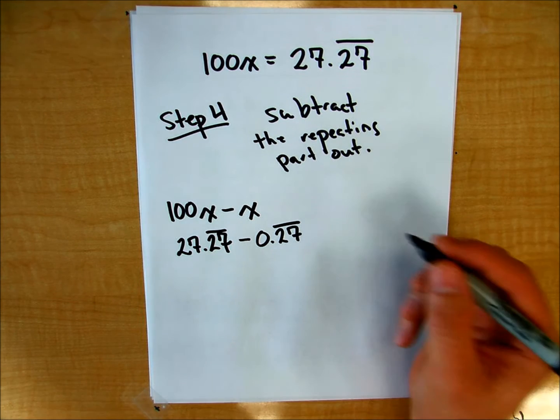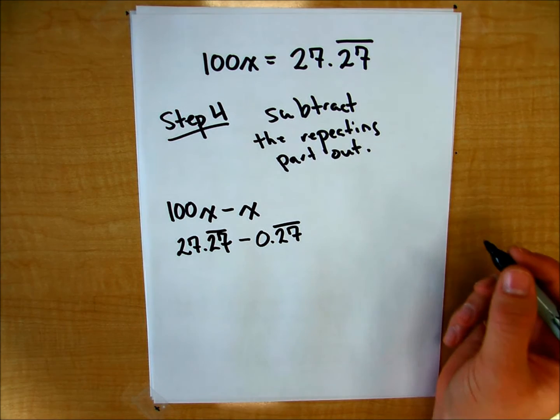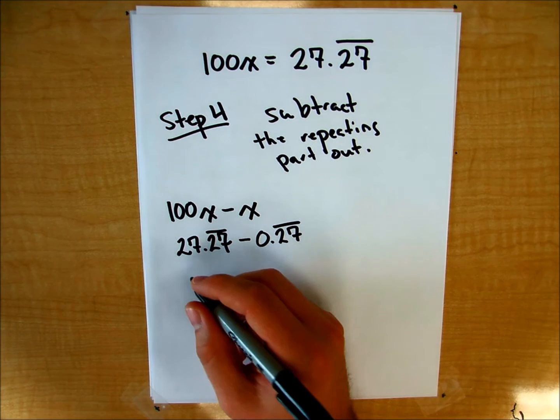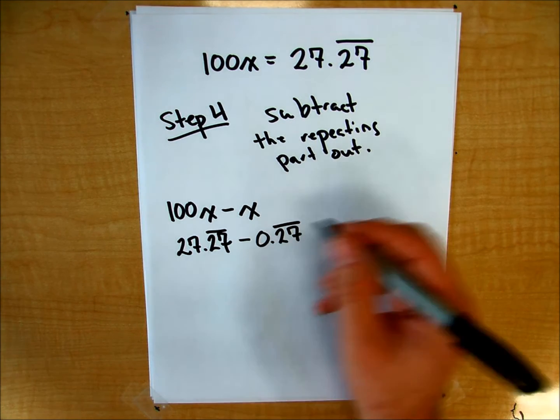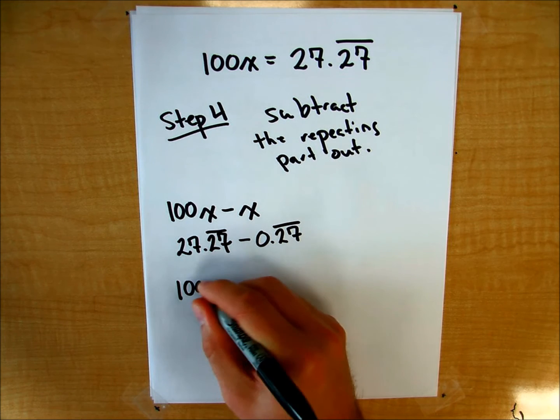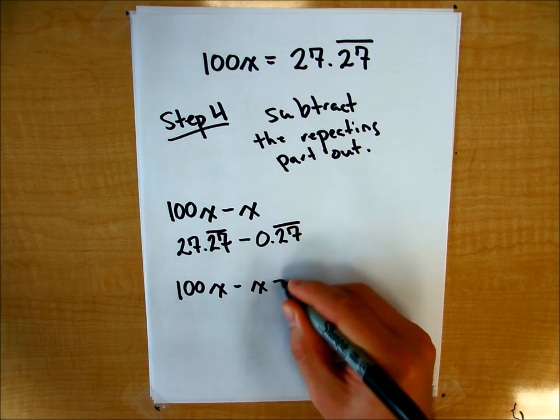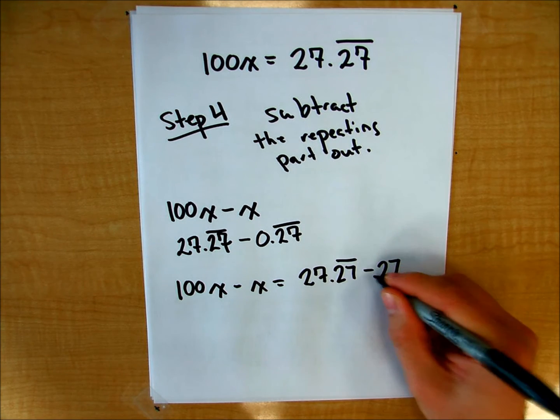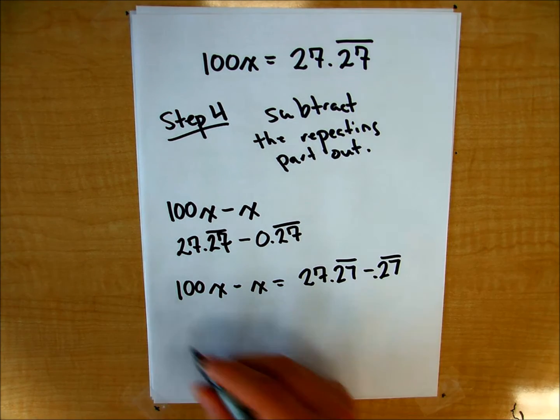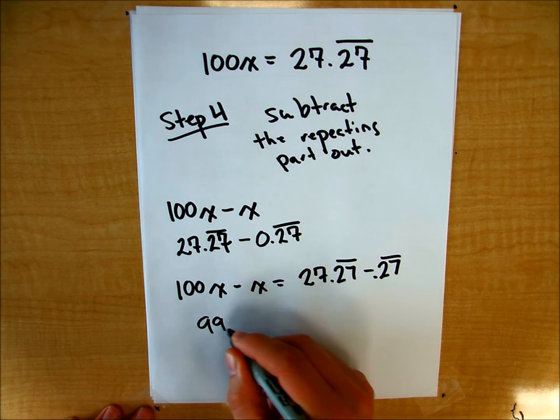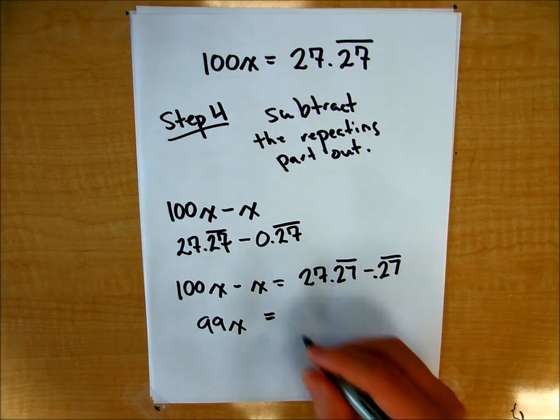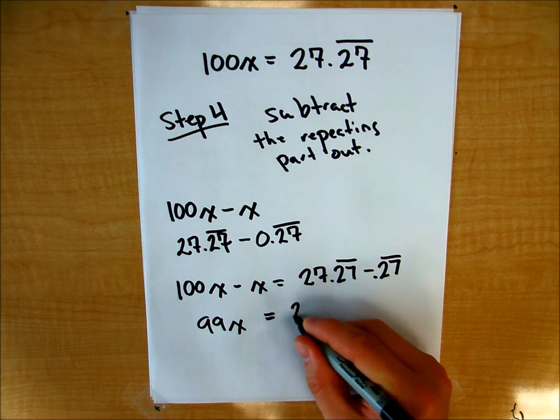Okay? So if I do this, I'm going to set these equal to each other. 100x minus x is equivalent to 27.27 minus 0.27 repeating. Okay, on this side, I'm going to get 99x. And on the right side, I'm just going to get 27.